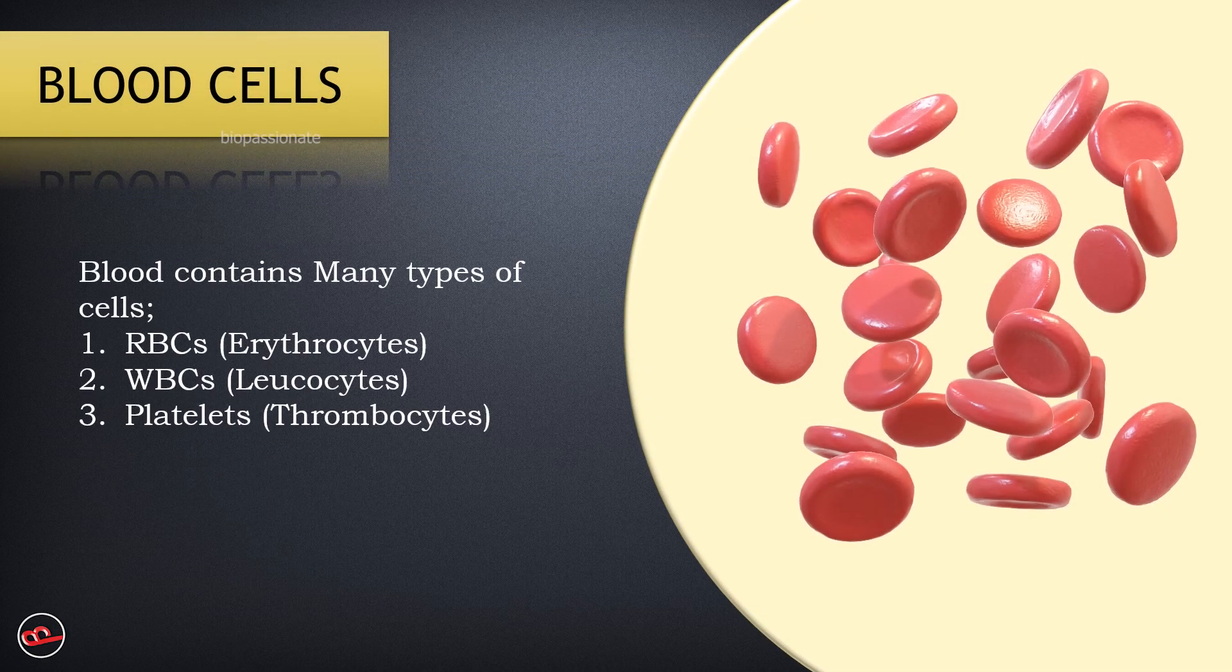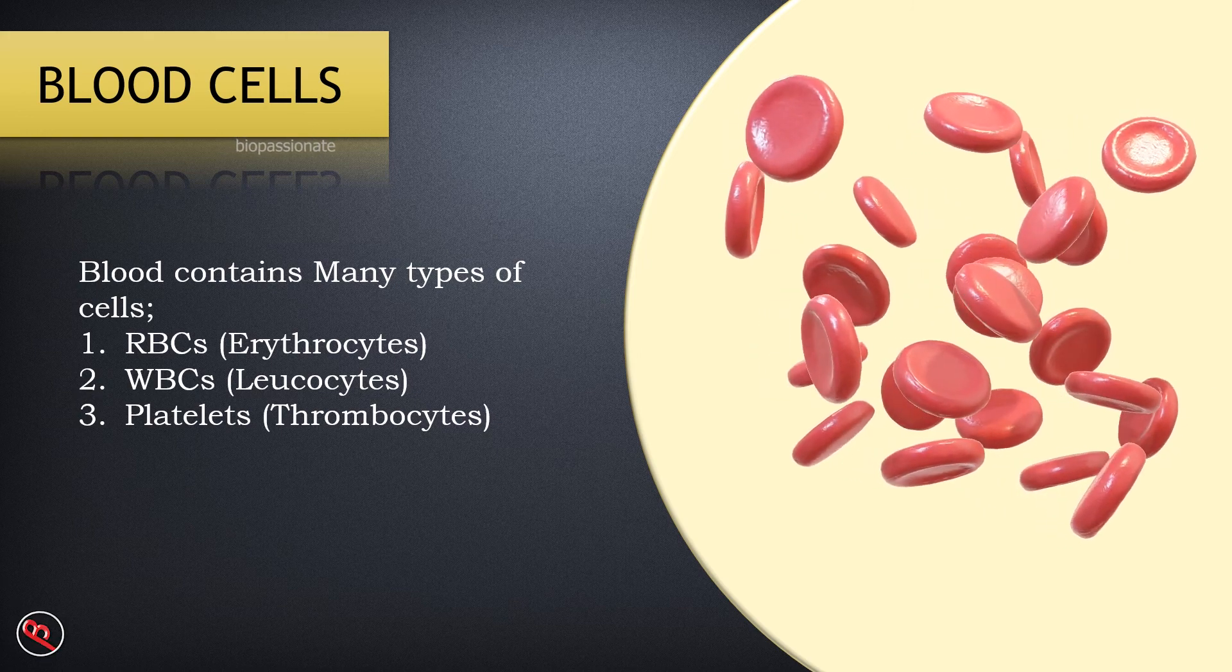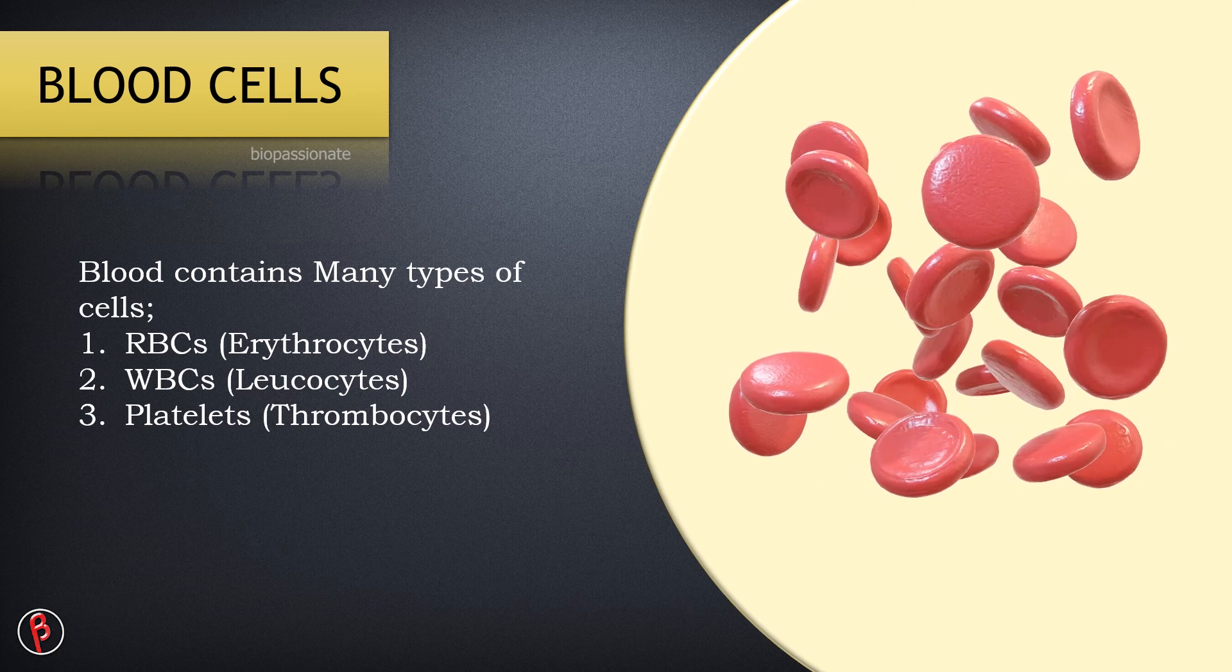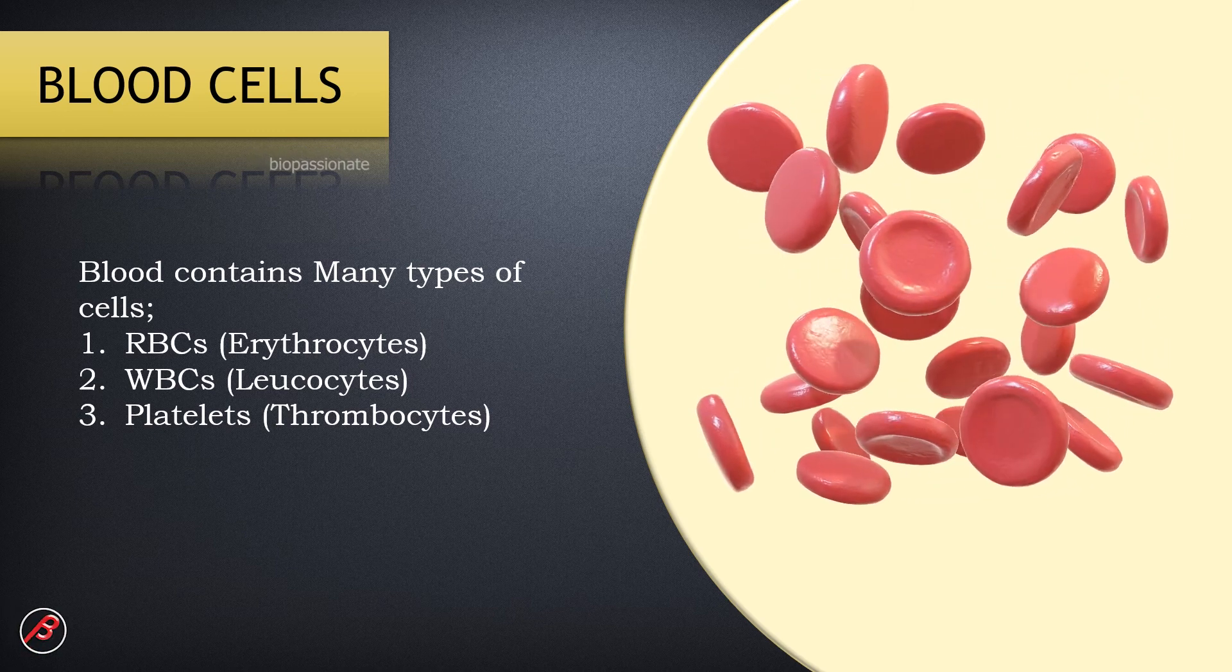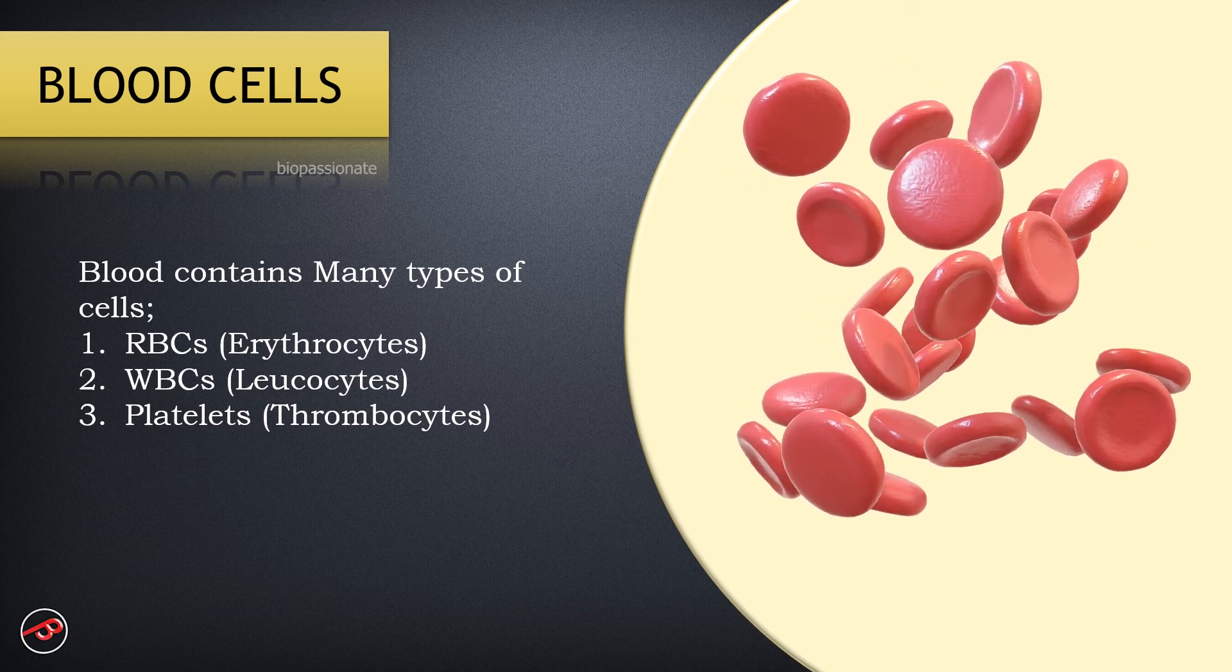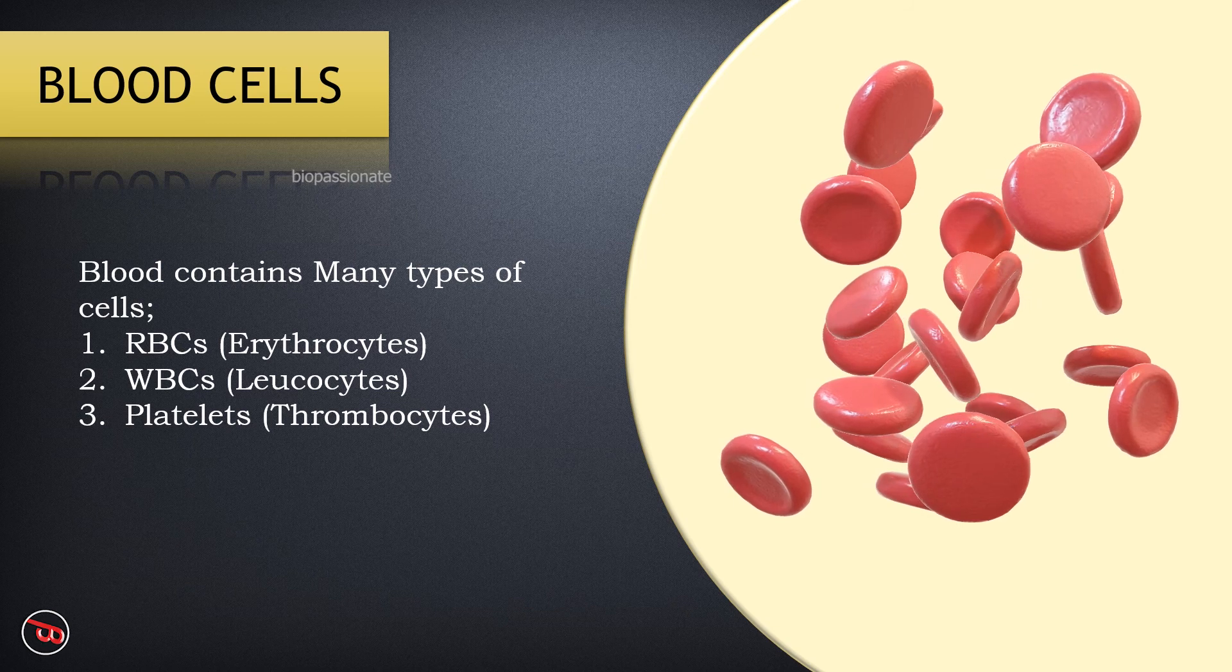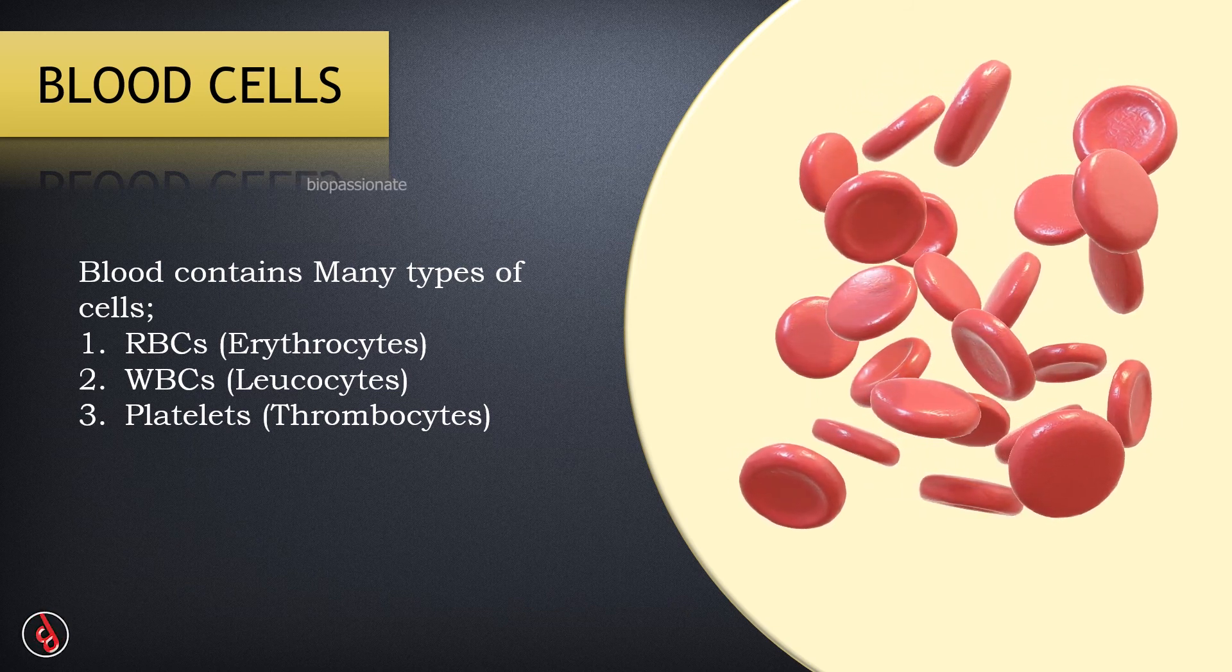Blood cells. Blood is a fluid connective tissue which helps in transportation of nutrients and oxygen. Blood contains many types of cells. Amongst them, RBCs (erythrocytes), WBCs (leucocytes), and platelets (thrombocytes) are more important. You will come to know the functions of RBC, WBC, and platelets in the next video.